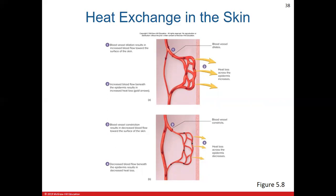Figure 5.8 shows examples of heat exchange and regulation of body temperature. In the dermis there are blood vessels with little sphincter muscles that wrap around them. They can dilate — allowing more blood flow close to the surface so heat can radiate off the person — or constrict, so blood still flows to the area but heat is lost more slowly, holding more heat internally.